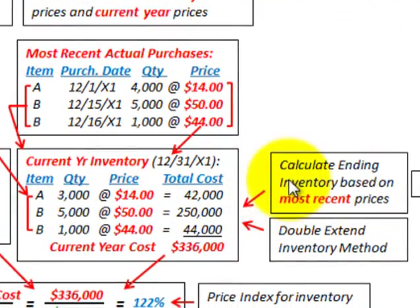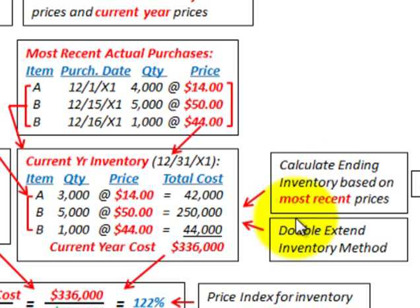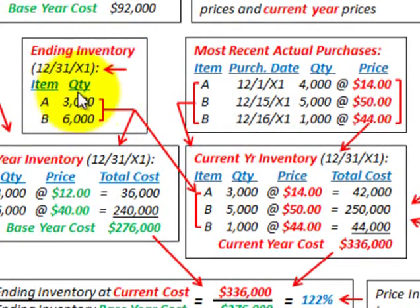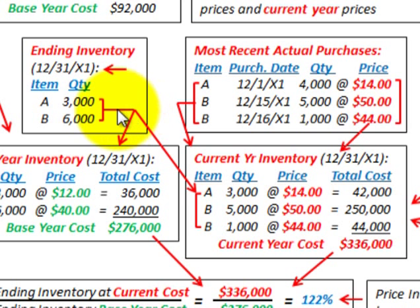Now we calculate our ending inventory based on the most recent prices — the current cost — again using the double extended inventory method. We still have ending inventory of Item A at 3,000 units and Item B at 6,000 units, but we calculate the current price based on the most recent actual purchases of the inventory.